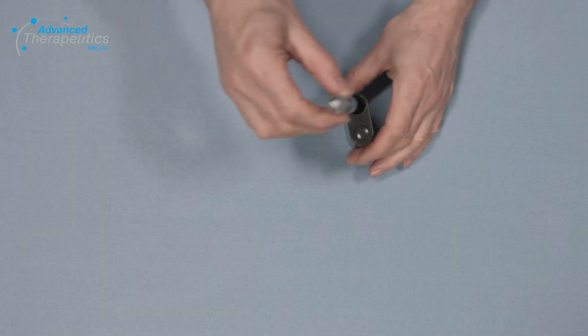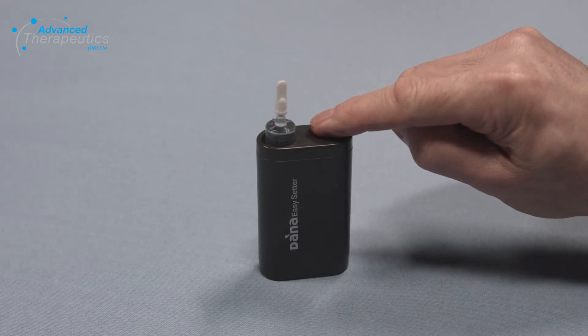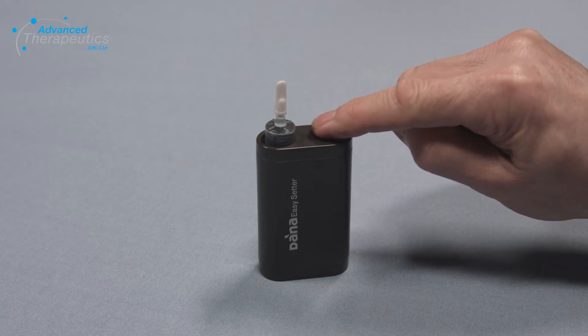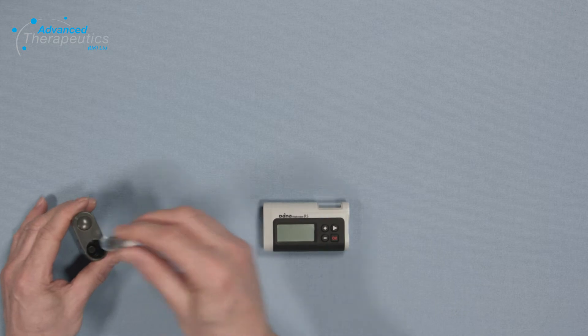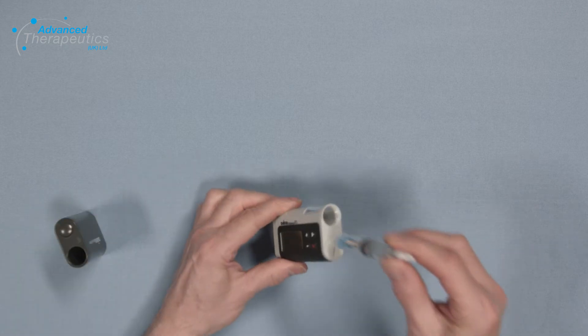Once filled with insulin, gently drop the reservoir into the easy setter and ensure that you hold the button for two to three seconds. After removing the reservoir from the easy setter, the end of the linking screw does not rest against the bung inside.